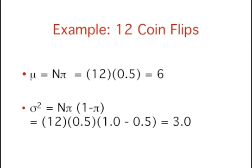Let's return to the coin tossing experiment. The coin was tossed 12 times, so n equals 12. A coin has a probability of 0.5 of coming up heads. Therefore, pi equals 0.5. The mean and variance can therefore be computed as follows.